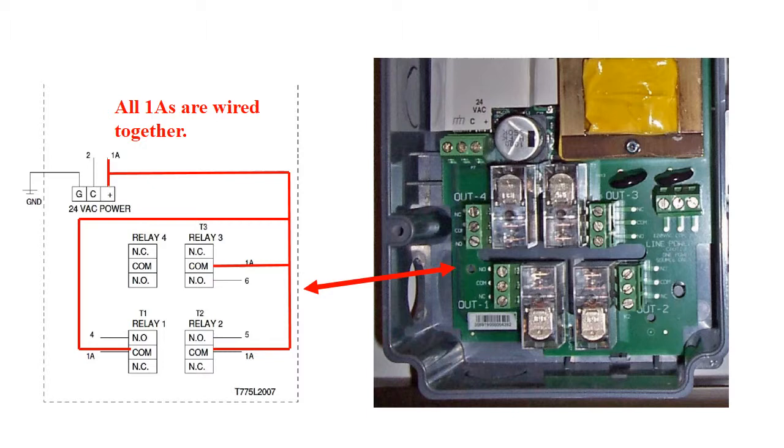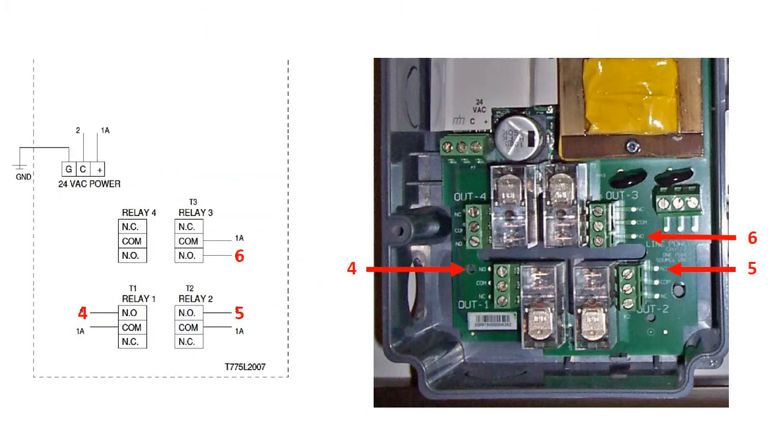Relay number 4 is not used in this installation. Next to the COMs are normally open terminals with the numbers 4, 5, and 6, which indicate the corresponding terminal connections on the dehumidifier as mentioned earlier. Be certain that you are on the normally open, or in some cases normally closed terminals, as indicated on the schematic for your installation.